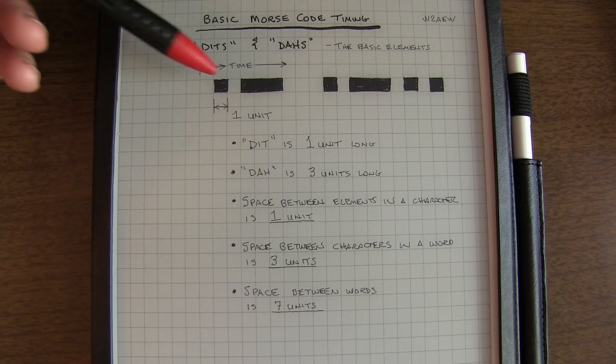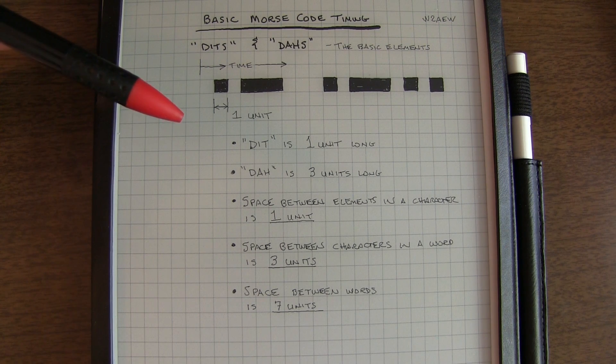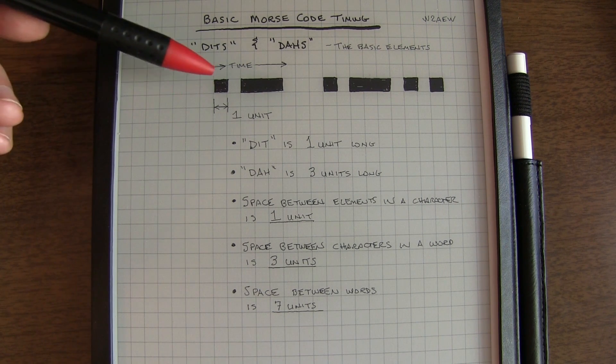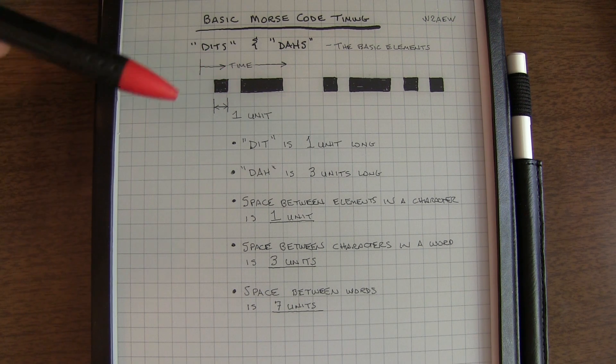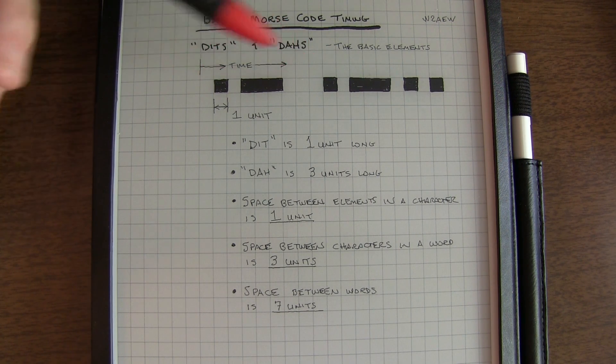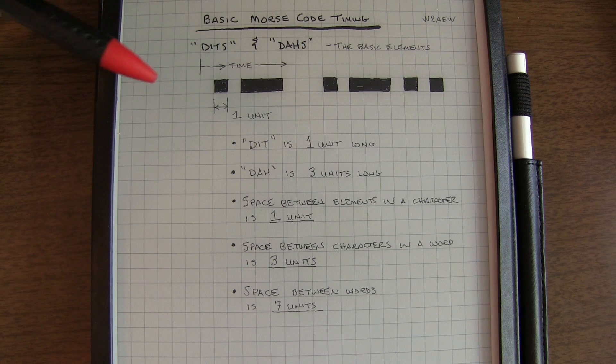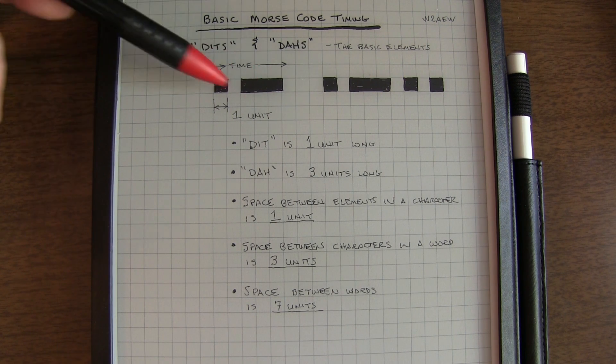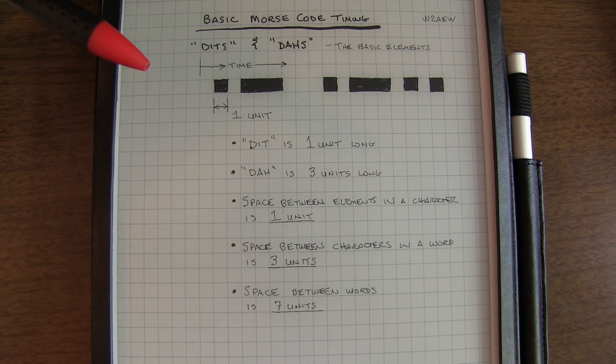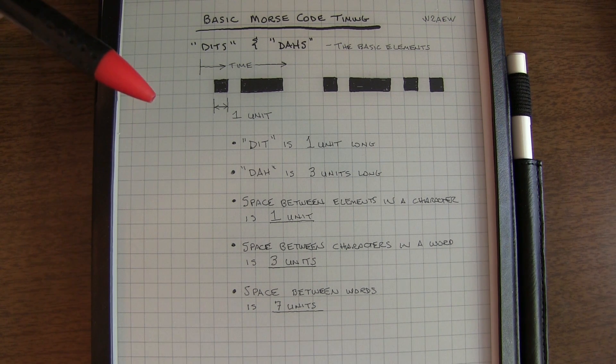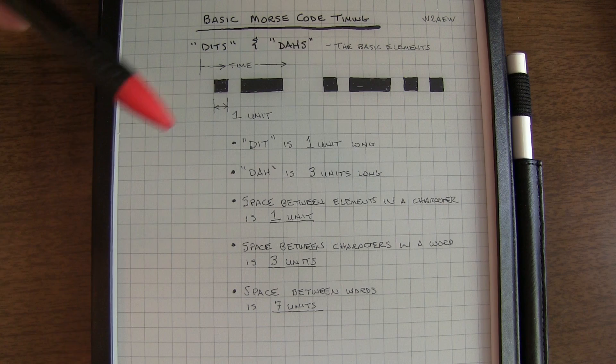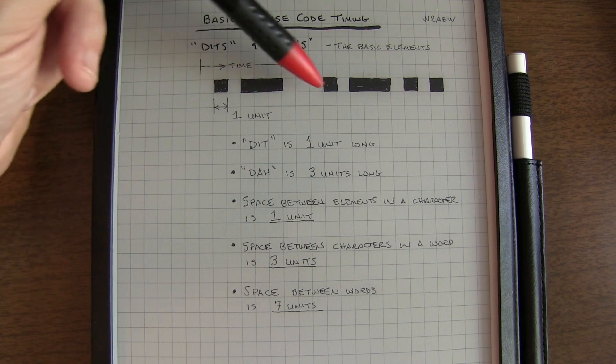Now some CW operators will take some liberty with these timings. And that's okay, as long as you're consistent about it, especially consistent between the spacing of the elements within a given character. Because even if you put a little more space between characters, or a little more space between words, as long as the character element spacing is consistent, then it should be easy to copy. In fact, that's a very common CW training method called Farnsworth, where the elements within a character are sent at a faster speed than one might be comfortable with. But that gets you used to listening to the pattern of the characters, and learning them and training your brain for them. And then you can gradually start moving the characters closer and closer together in time until you get to this spacing.